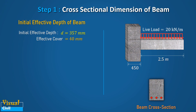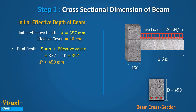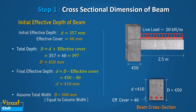Now, compute the total depth of the beam by adding the effective cover to the effective depth, which comes to 397 mm. Round up the total depth to the higher side, equal to 450 mm. Recalculate the final effective depth by subtracting the effective cover from the total depth, which comes to 410 mm. Assume the total width of the beam equal to the column width as 300 mm.